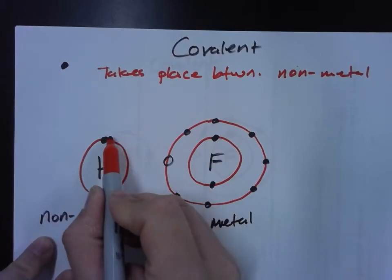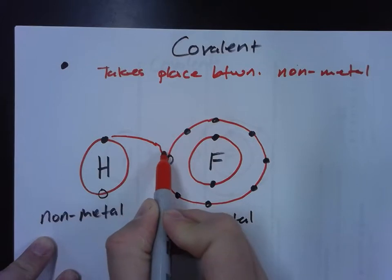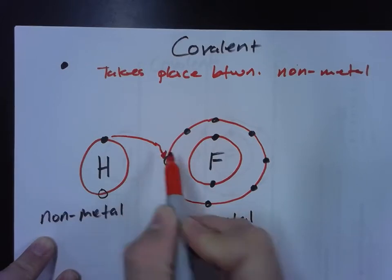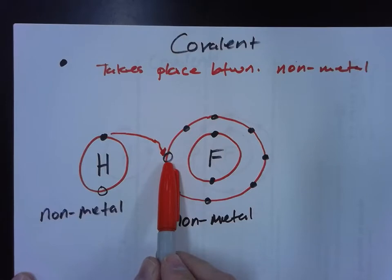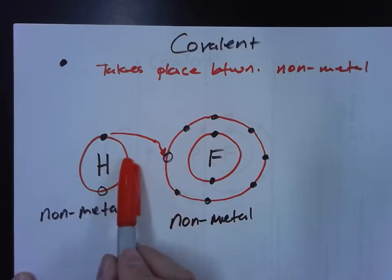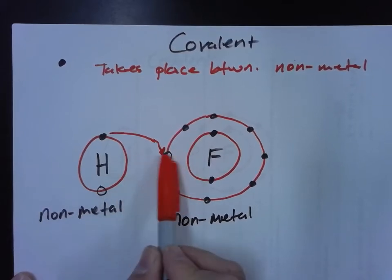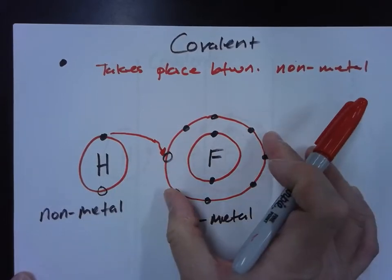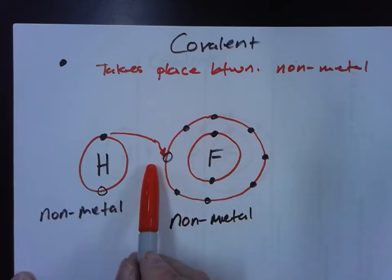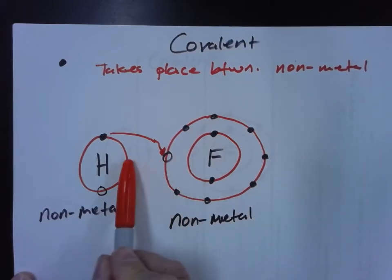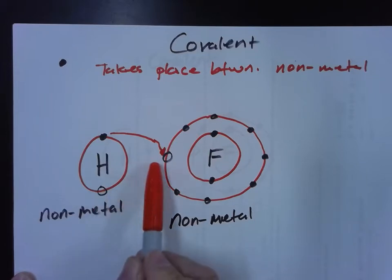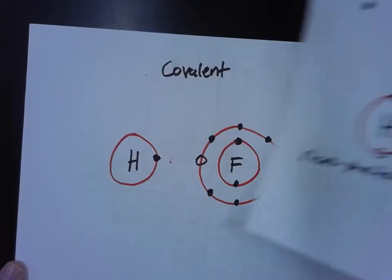This electron will get shared over here. It'll get shared between hydrogen and fluorine. And then this actually satisfies both of these open seats here. Because what will happen is the electron is going to bounce back and forth, very quickly. Mostly, it's going to be over here on fluorine. But they're going to share this bond. And this bond will actually satisfy both of these empty spaces here. Pretty neat. So here's what that would look like.